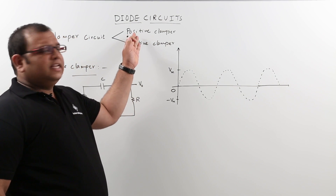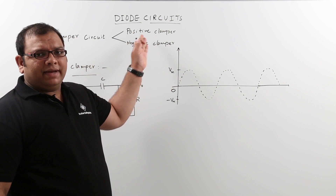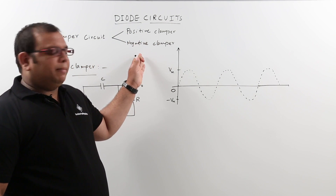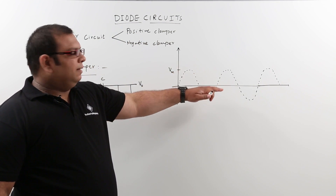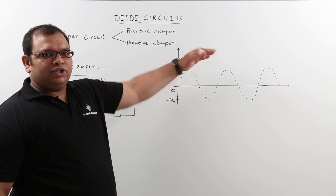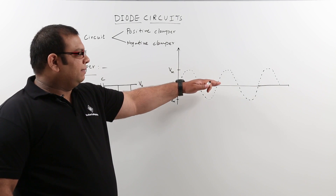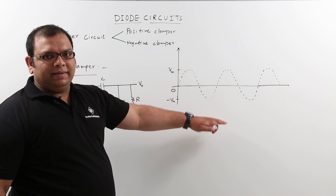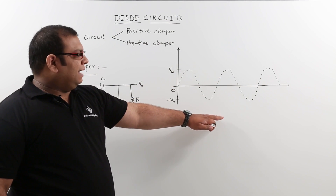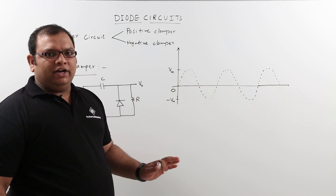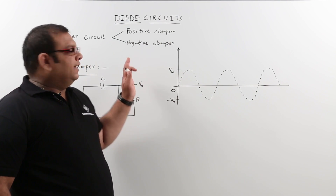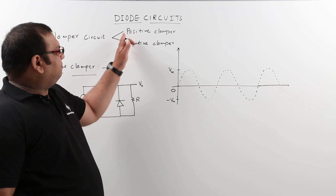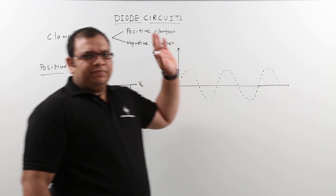Clamper circuits are classified as positive clamper as well as negative clamper. Positive clamper means the DC value will be clamped to the positive, and negative clamper means the DC value will be clamped to the negative value. Now let us see the positive clamper.